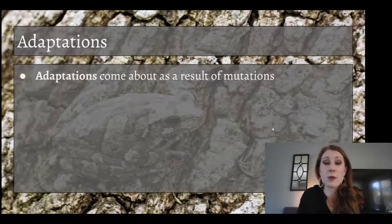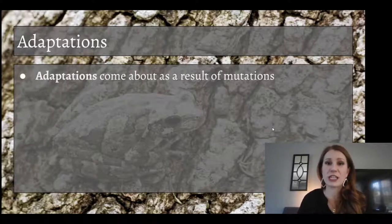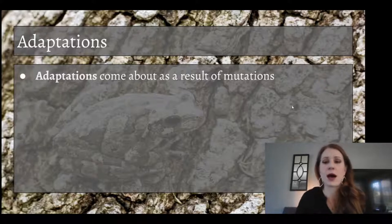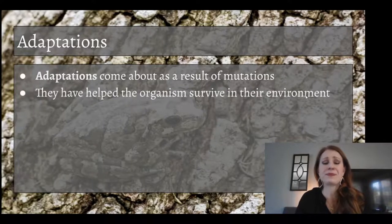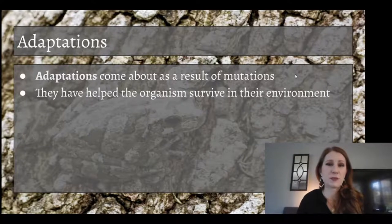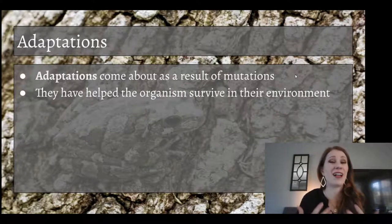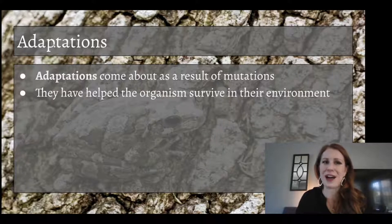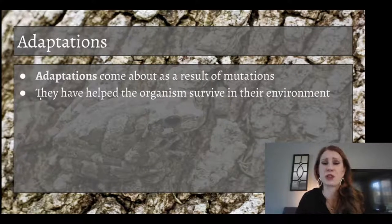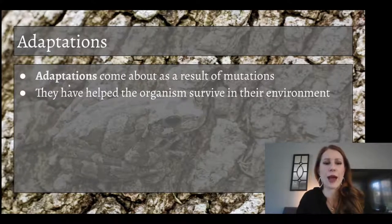Adaptations come about as the result of mutations. Remember, mutation is a change in a DNA sequence, and it causes new traits to pop up. It happens randomly. Adaptations help an organism survive in their environment. Adaptations, by definition, are helpful. If it's not helpful, it's not adapting well to the environment. Usually those organisms die out if they have an unhelpful mutation. So adaptation is kind of another name for a helpful mutation.